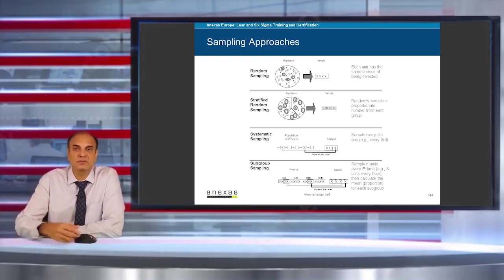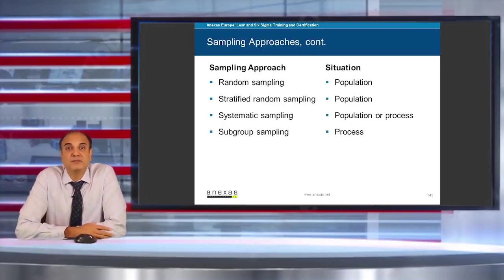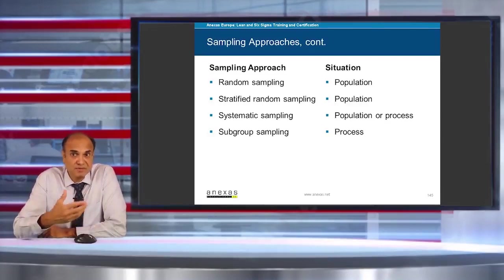Before I talk about the sampling approaches, let us see when to use which approach. Random sampling and stratified random sampling are usually used for generating a sample from a population.